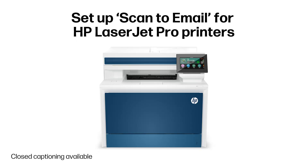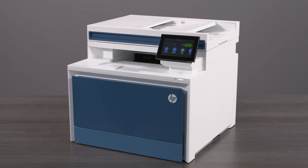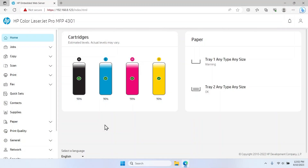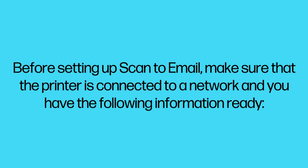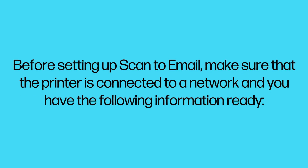To set up scan to email for HP LaserJet Pro printers, you can set up the scan to email feature to adjust outgoing email options and other default scanning and email settings. This can be done by accessing the printer embedded web server, or EWS for short. Before setting up scan to email, make sure that the printer is connected to a network.